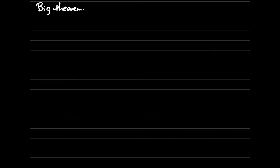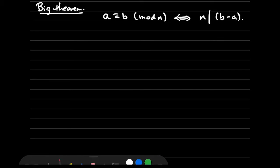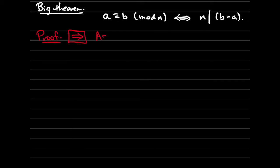Now here's a big theorem that relates remainders and division. Theorem: The integers A and B are congruent modulo N if and only if N divides B minus A. We will prove this theorem first going in one direction and then the other.